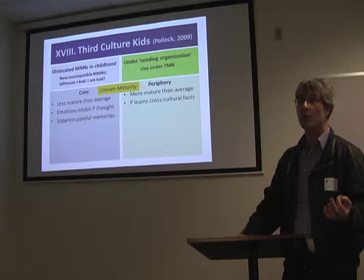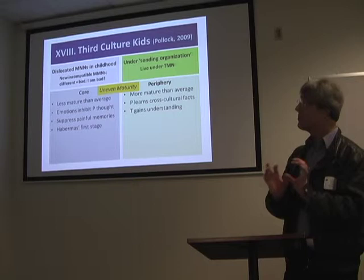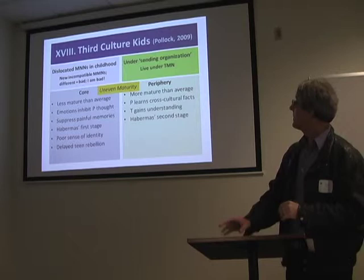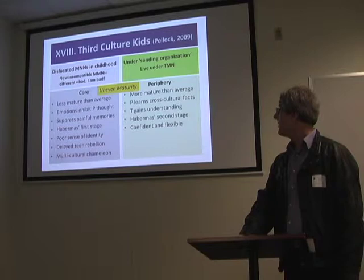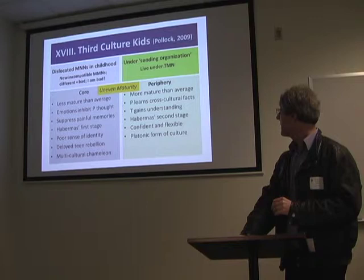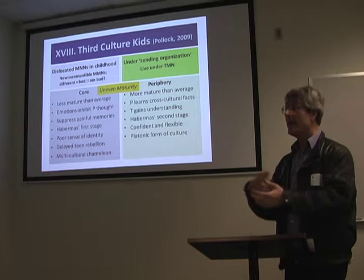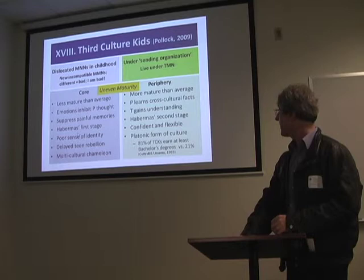In the core, they're suppressing their memories. In the periphery, they're gaining understanding. In the core, it's Habermas' first stage; in the periphery, second stage. In the core, they don't know who they are, and they often have a teenage rebellion much later. In the periphery, they can travel all around the world — no problem. In the core, they're a multicultural chameleon using a facilitator filter to balance. And in the periphery, they've got the Platonic form of culture — a meta-culture. They're connected with other third-culture kids regardless of the specific culture, and they're much more likely to gain a bachelor's degree.